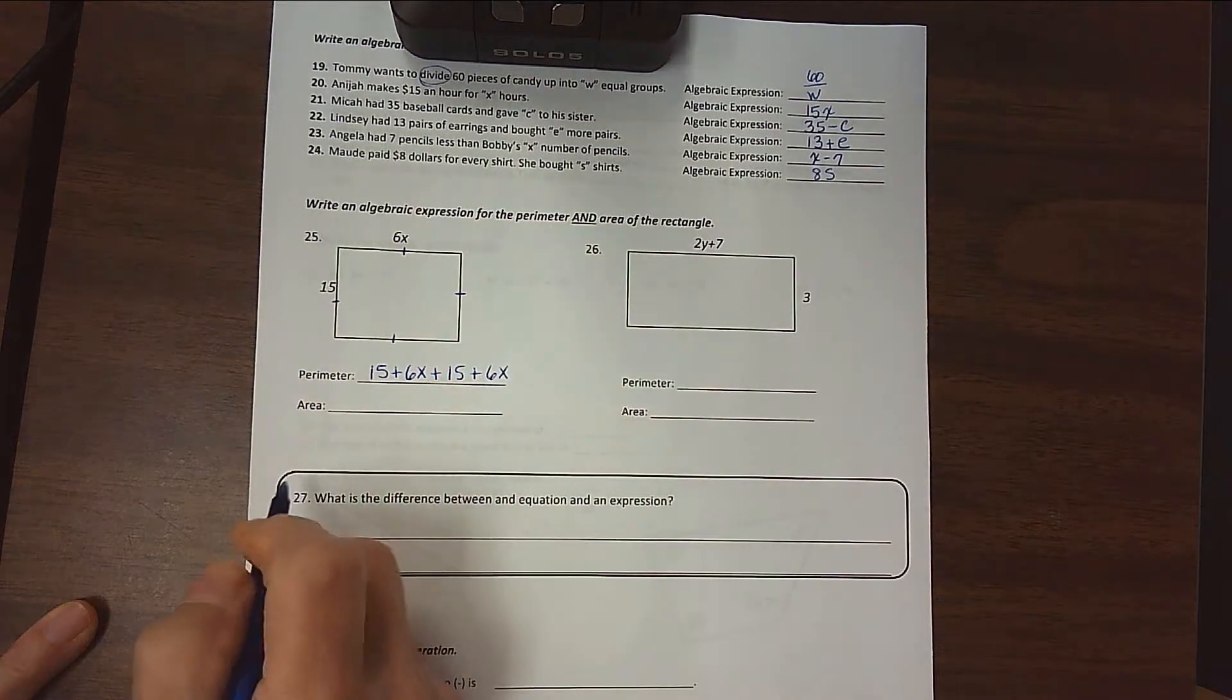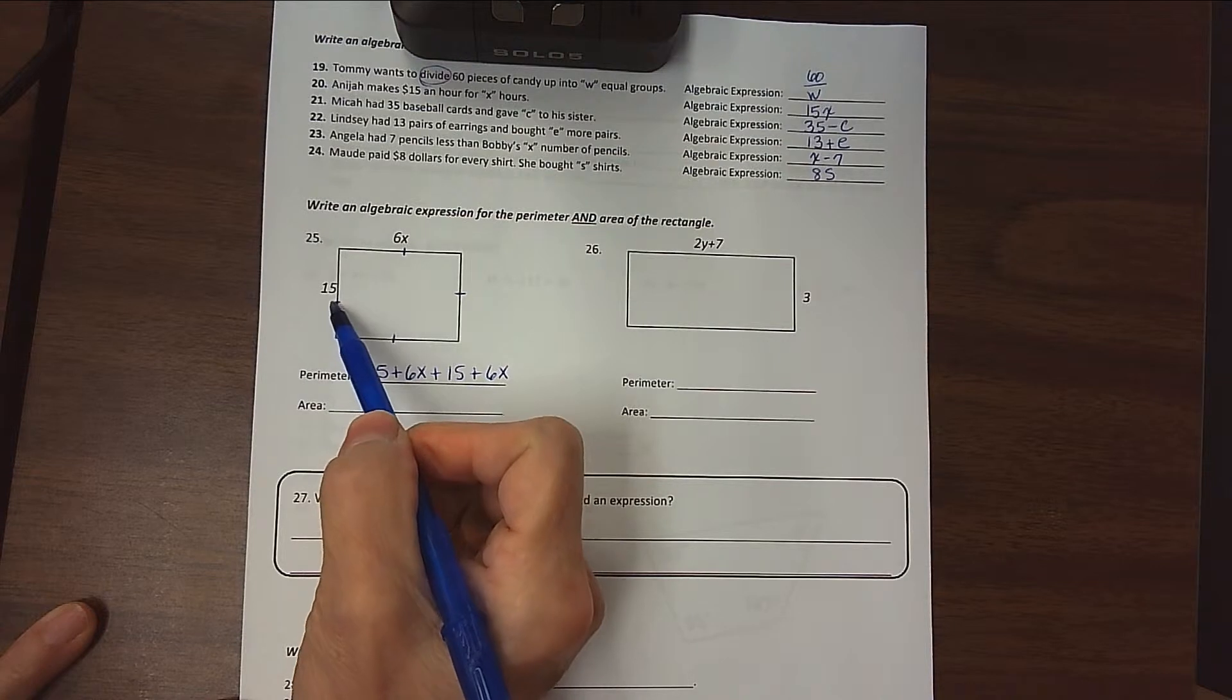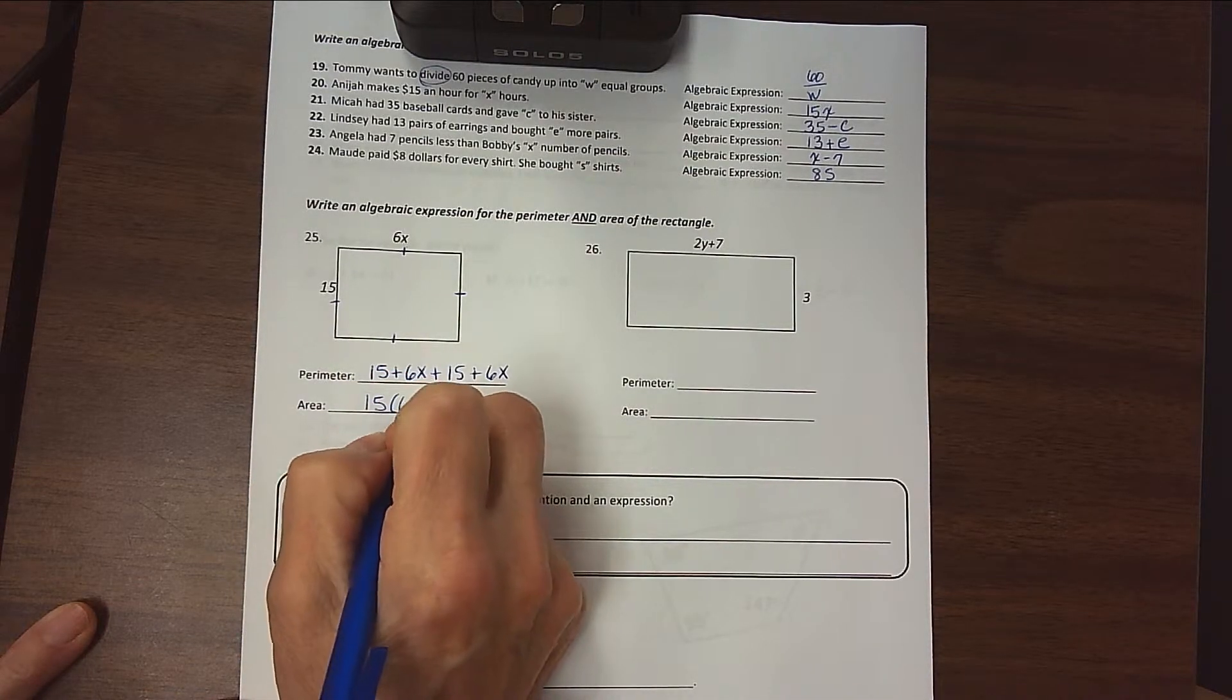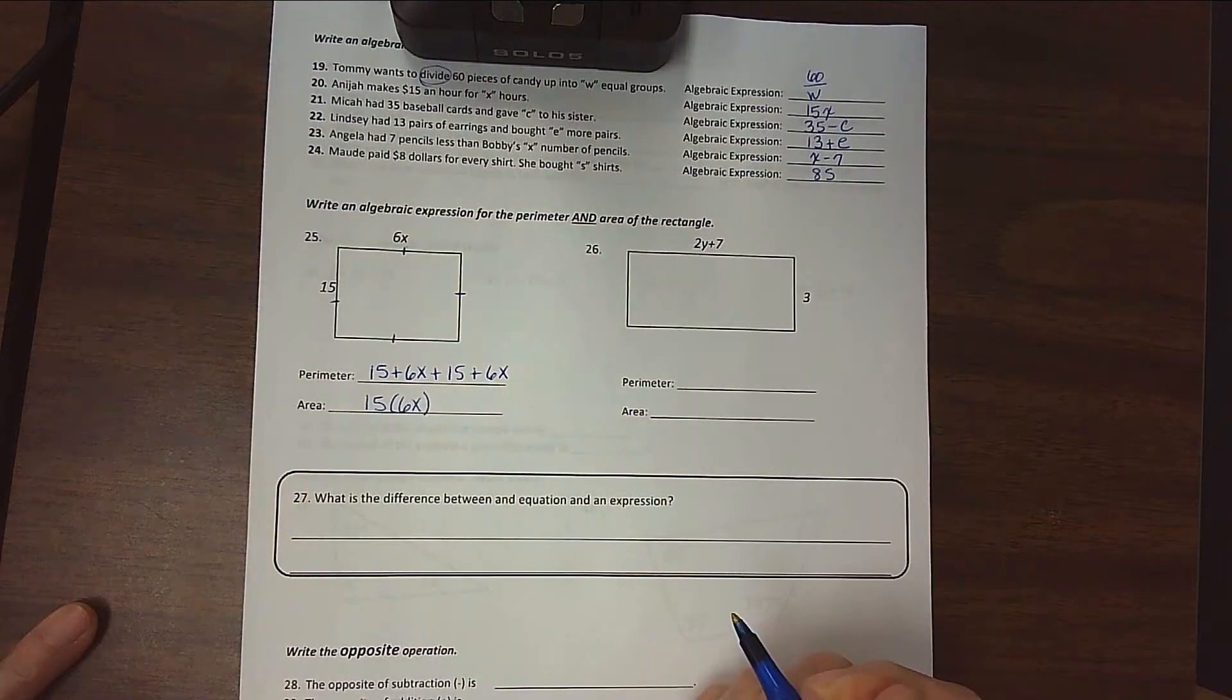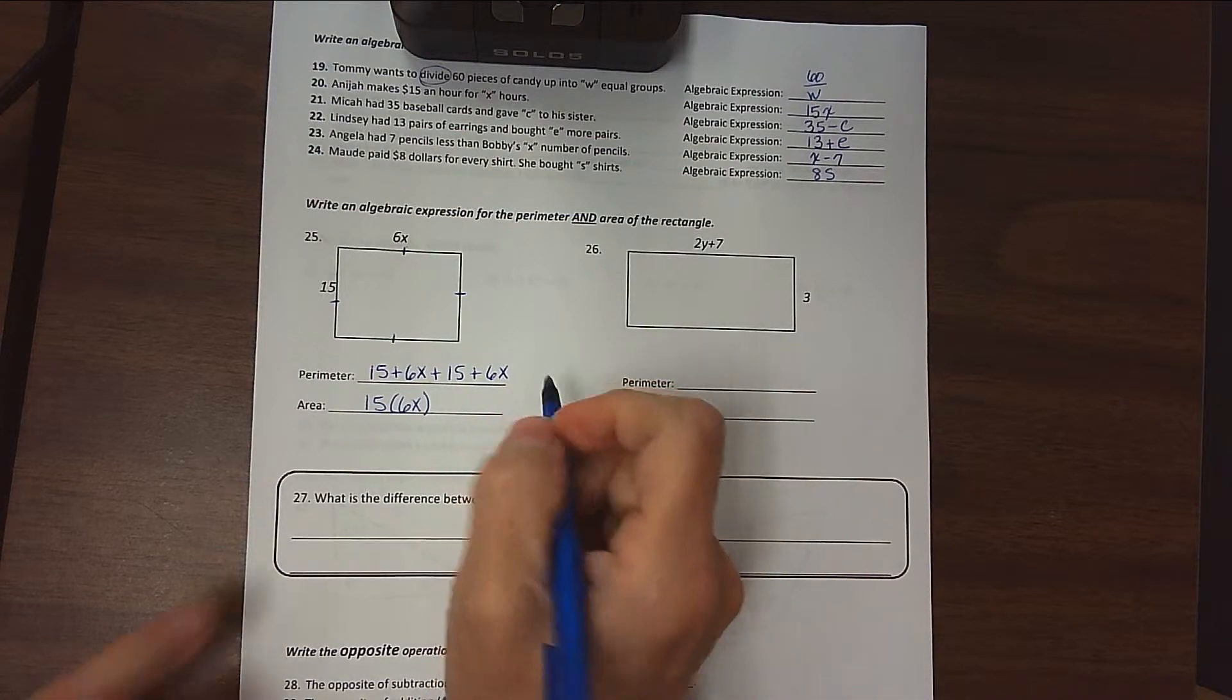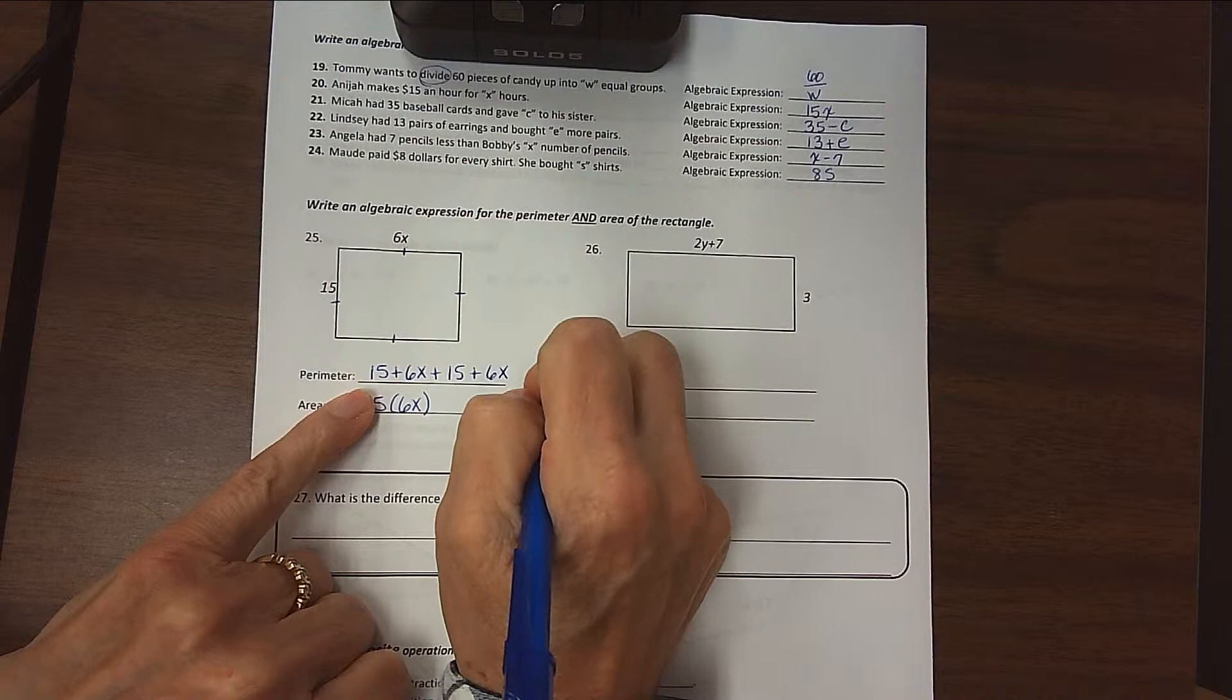And then for area, it's length times width, so 15 times 6X. Okay, we could shorten those up, and if you remember how to do that, we talked about that in class, that's great. I'll just remind you that we can add the two 15s, so that would be 30.